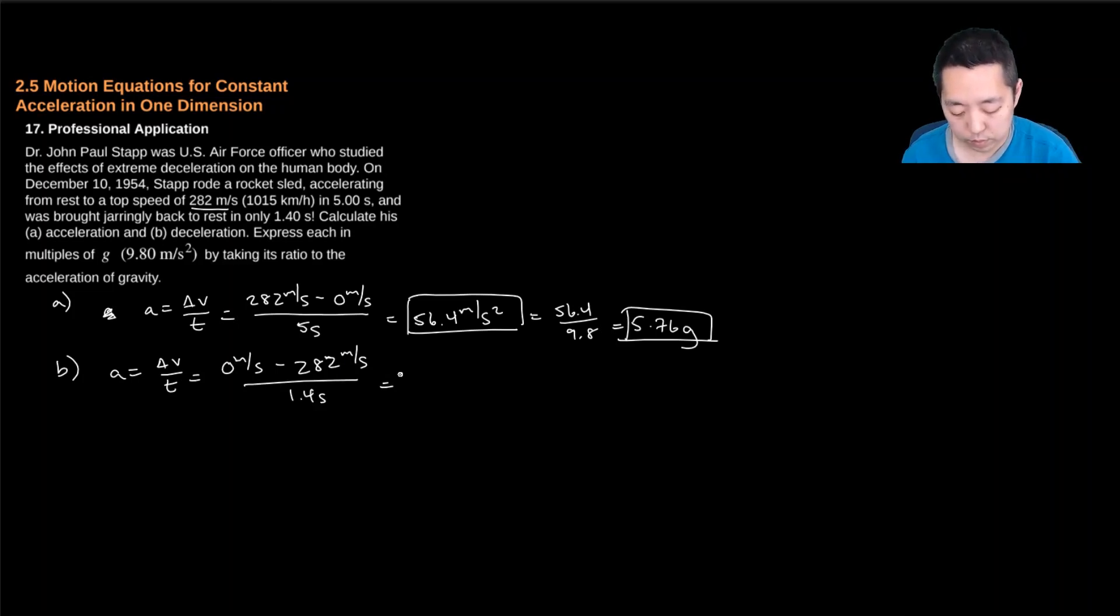and that's negative 201 meters per second squared. And if I divide that by 9.8, that's negative 20.6 G's. That's a lot of G's, actually.